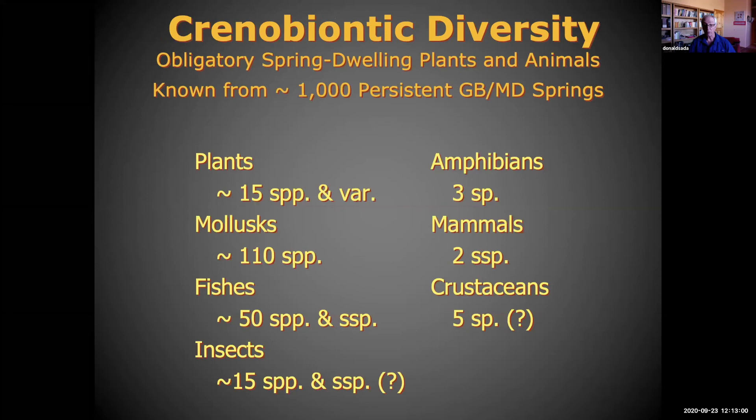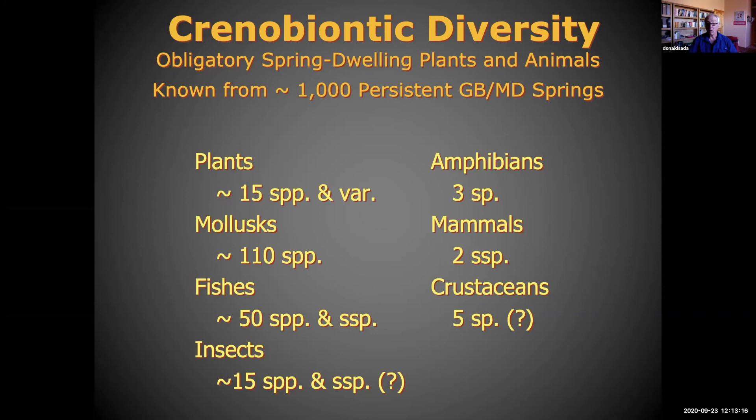Crenobionts in these systems are dramatic and truly spectacular — a lot of plants, mollusks, fishes, insects, amphibians, mammals, crustaceans associated with springs and spring provinces. Most of these things have just been described — except for fishes — and mollusks have been described since 1990. There's a lot of information there.